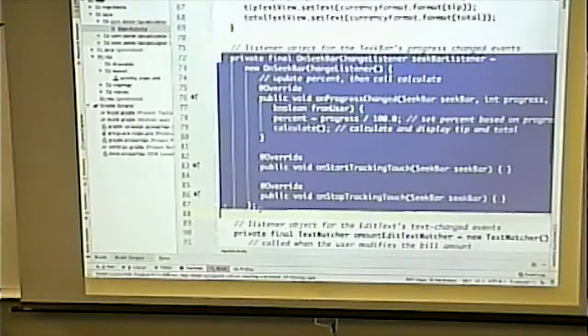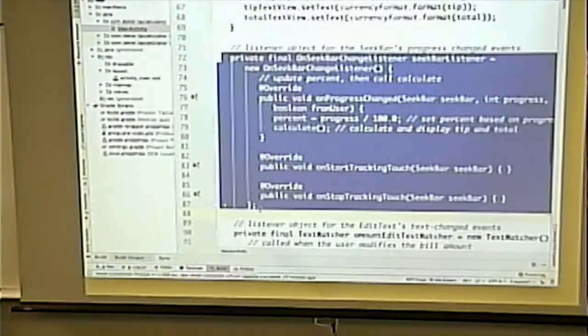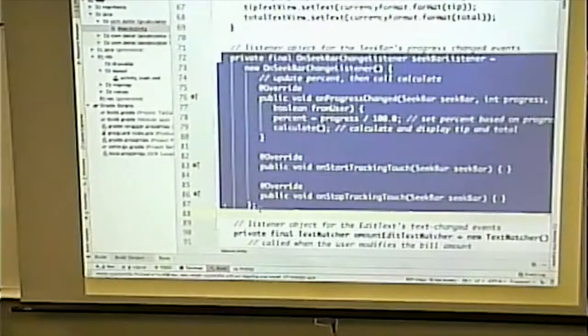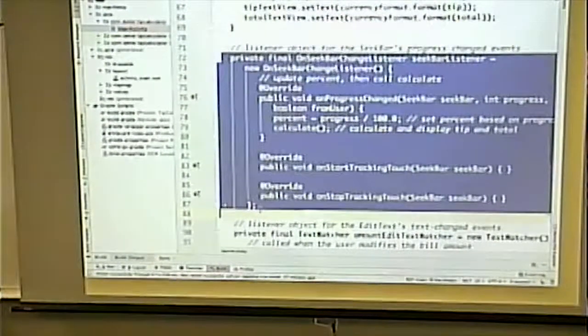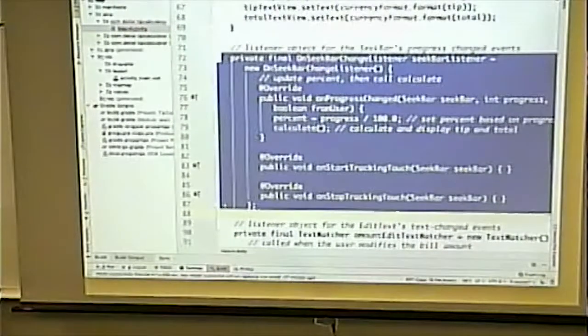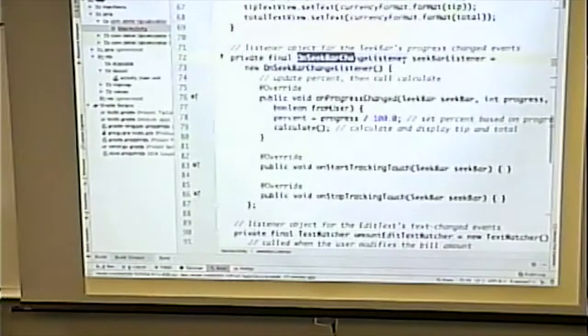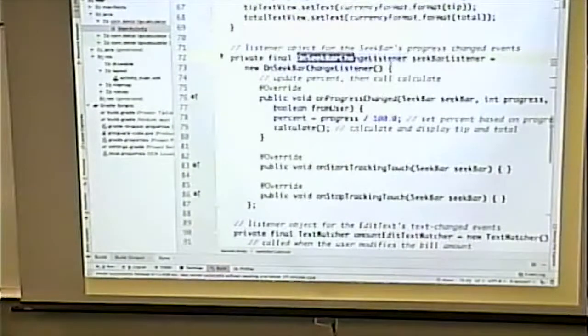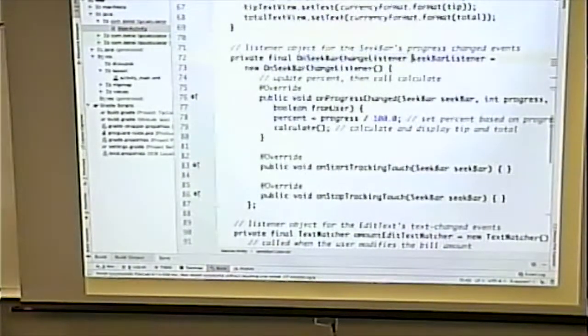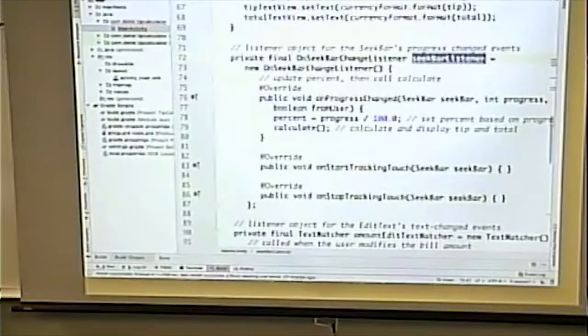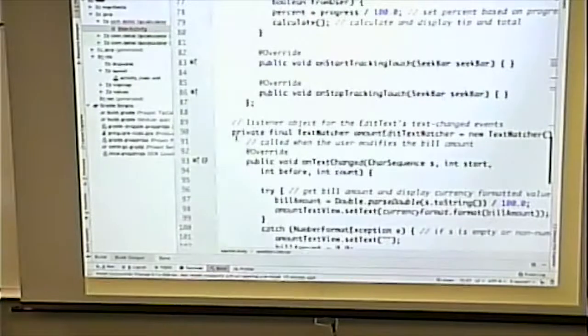There's two. There's actually a class or an object that's defined right in the class itself. And they put it at the bottom. I probably would have put it up top. Because this is really another instance variable. It's another object. What type of object is it? It's an on seek bar listener. On seek bar change listener. And the name of the object equals seek bar listener.